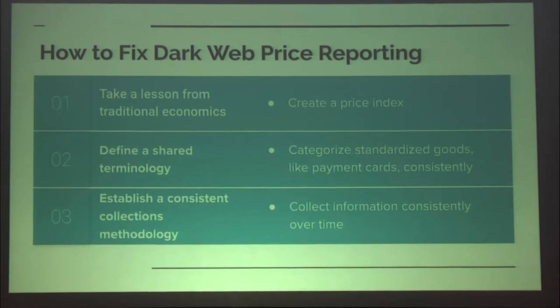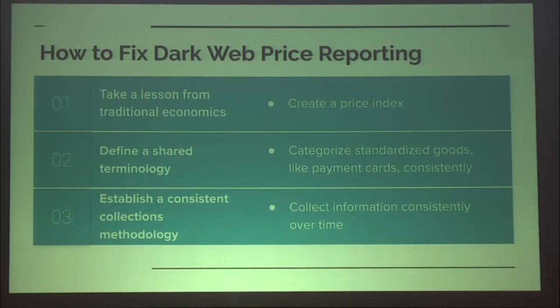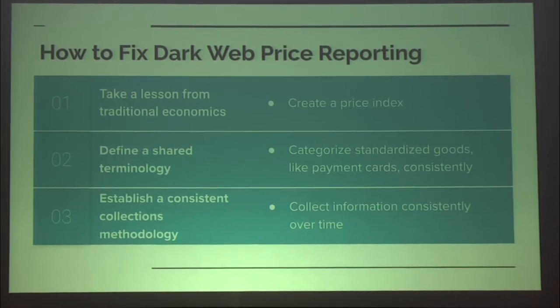So how do we fix dark web price reporting and research? There are three main things. First, studying the dark web is a very young phenomenon, so when you encounter a problem for the first time, steal a solution from someone else who's figured it out. The industry we propose stealing from is economics. We should follow economics' example and create a price index — a dark web shopping basket — by defining a basket of goods everyone agrees is indicative of general pricing trends, and having everyone use it to survey and collect a defined number of payment cards of specific types and credential sets. We can then compare across research efforts and track general pricing trends over time.